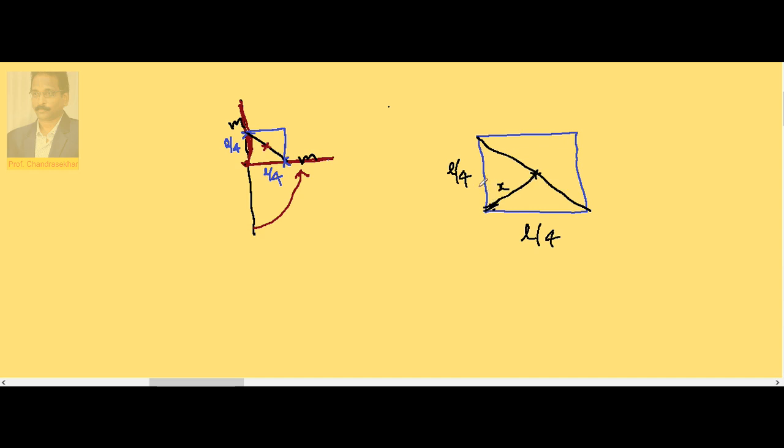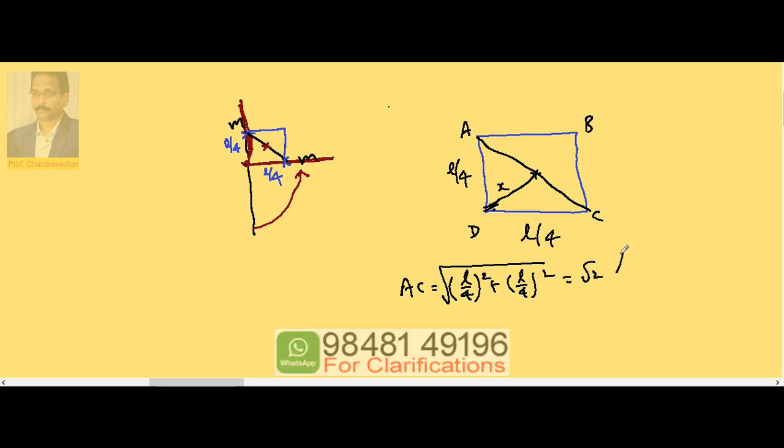Now what is the value of this one? If I call this as A, B, C, and D, from the figure, AC is nothing but root of (L by 4)² plus (L by 4)², because ADC is a right triangle. This is L by 4, this is L by 4, so the diagonal is root 2 into L by 4, or L by 2 root 2.